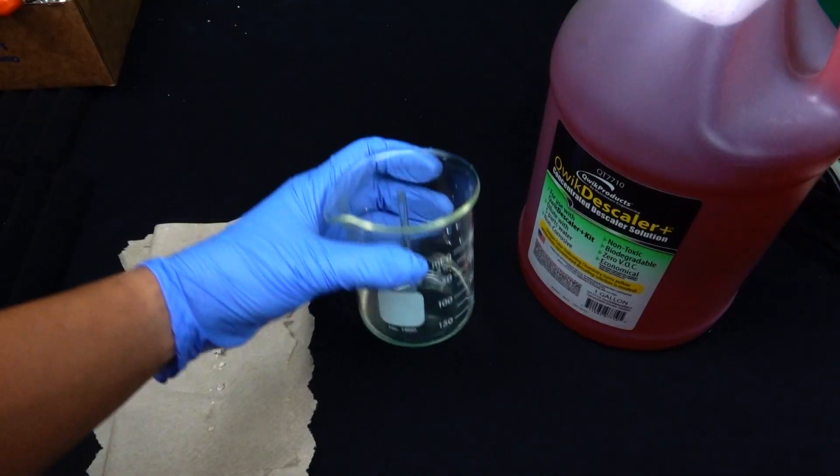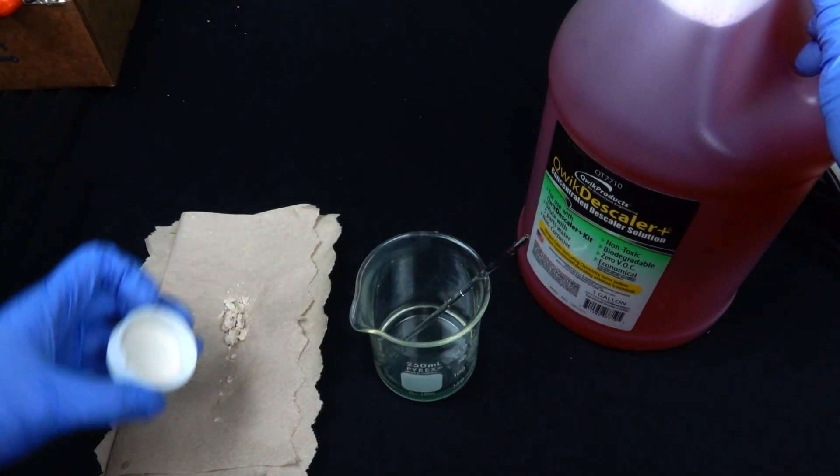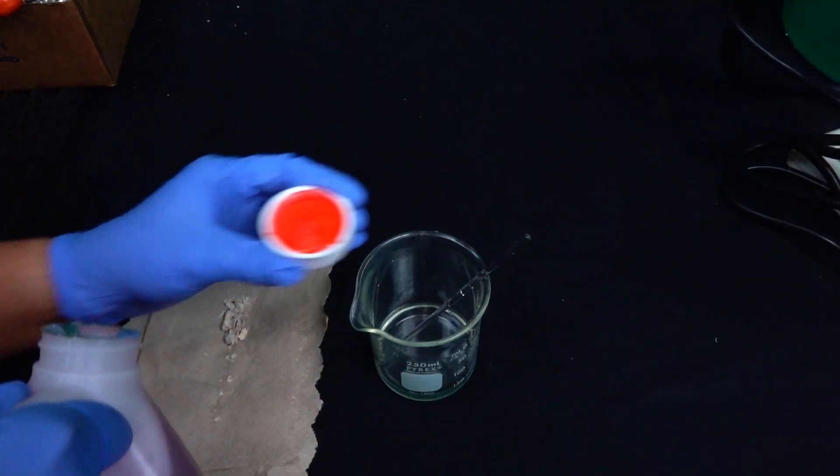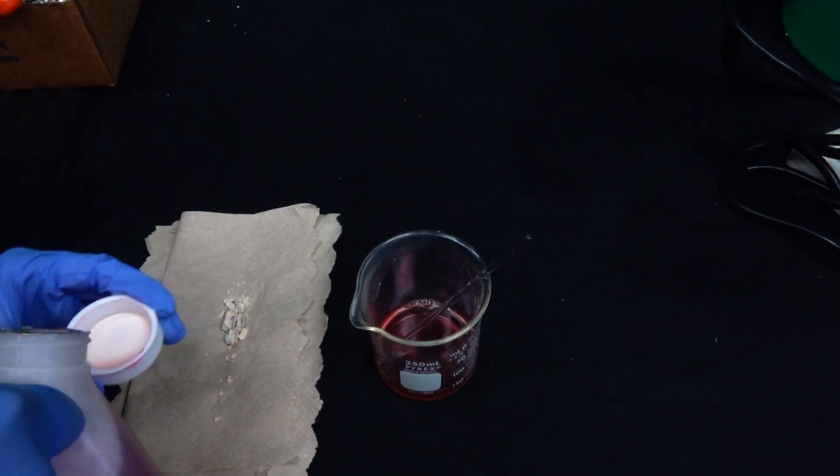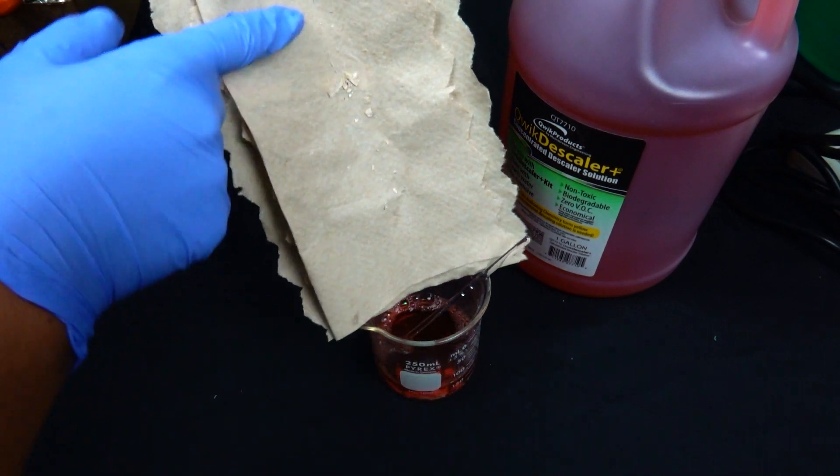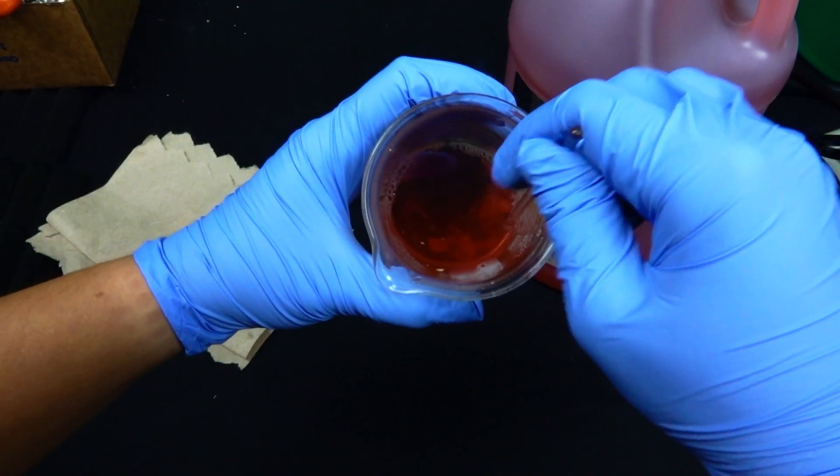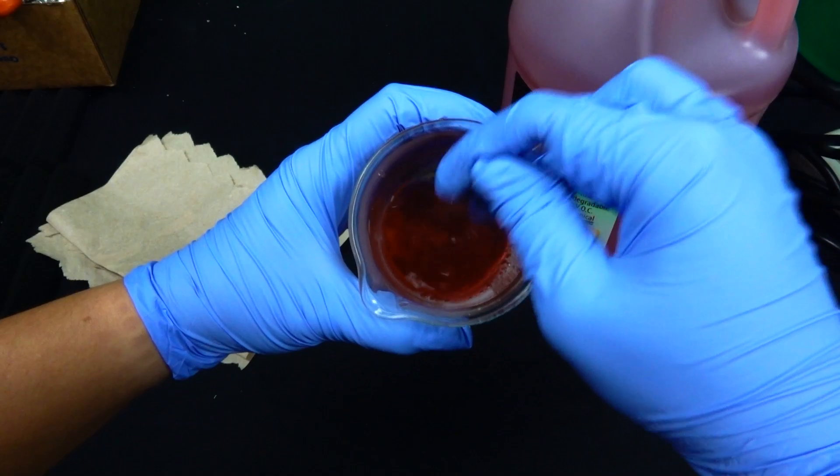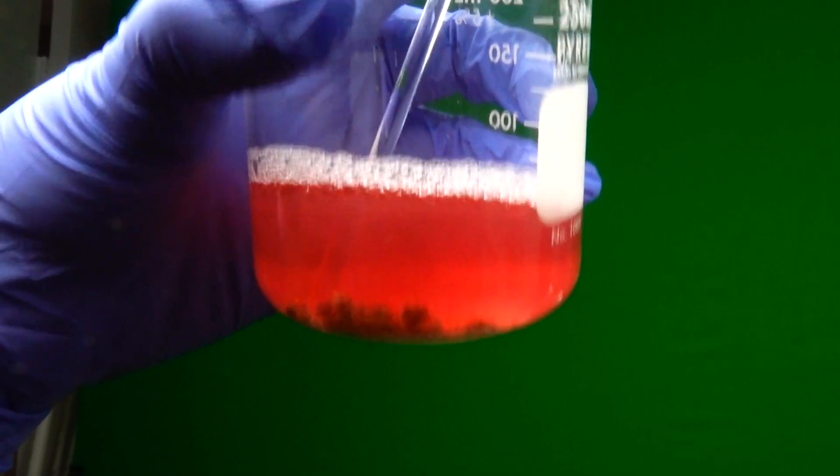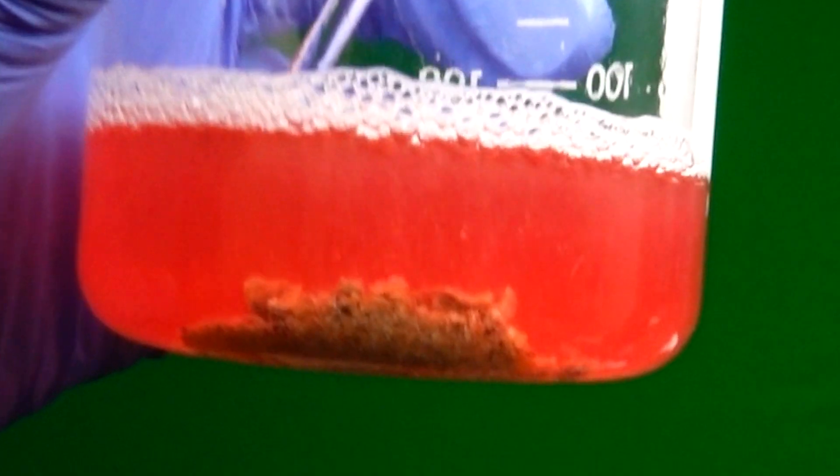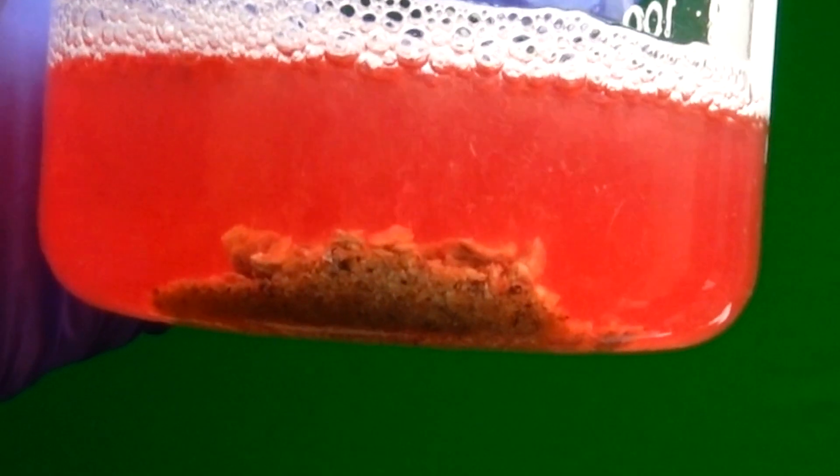So how does this work? Well, check this out. If we take our descaler solution diluted with some water to the proper ratio, add some scale picked off from the old heater element, and simulate the cycling process by simply stirring it, you will immediately start to see bubbles being released. This is our descaler eating away at the scale.